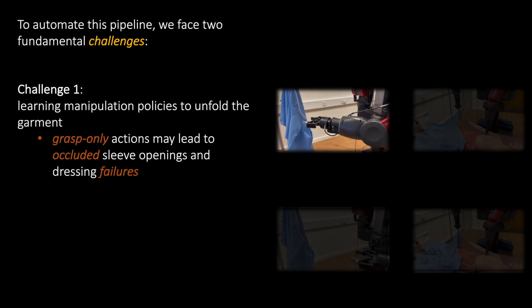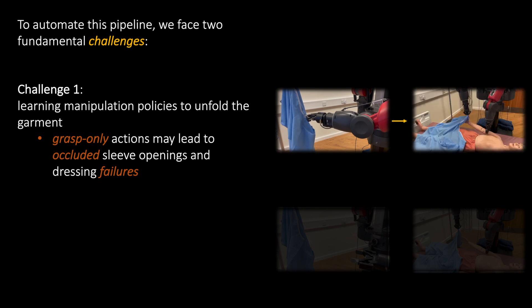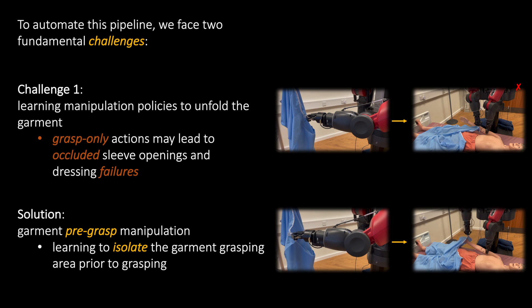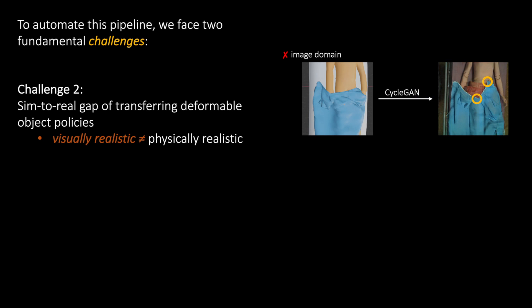To automate this pipeline, two fundamental challenges are faced. The first challenge is the manipulation of the garment to bring it from an uncertain state into a configuration that facilitates robust dressing. We propose an active pre-grasp manipulation learning framework, which aims to isolate the garment grasping area prior to actual grasping.